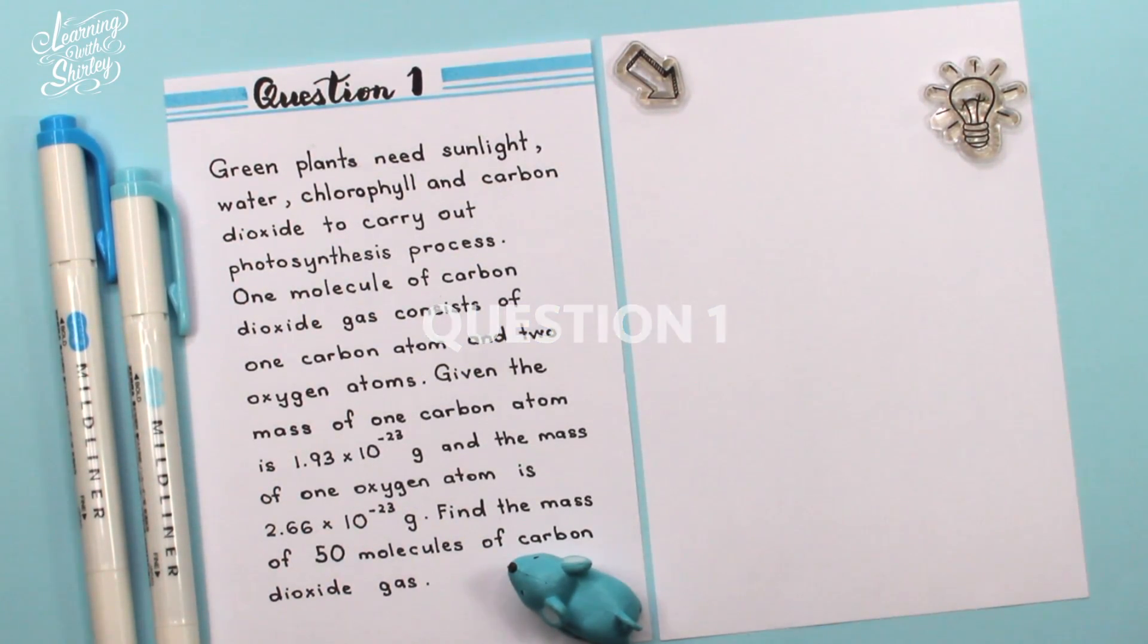For question number one, green plants need sunlight, water, chlorophyll and carbon dioxide to carry out photosynthesis process. One molecule of carbon dioxide gas consists of one carbon atom and two oxygen atoms. Given the mass of one carbon atom is 1.93 times 10 to the power of negative 23 grams and the mass of one oxygen atom is 2.66 times 10 to the power of negative 23 grams. Find the mass of 50 molecules of carbon dioxide gas.